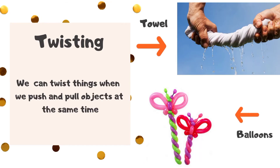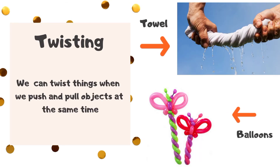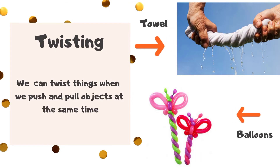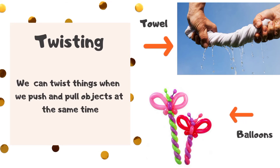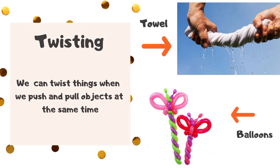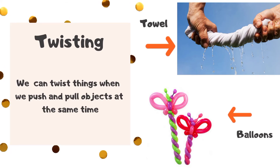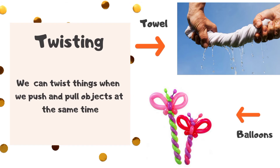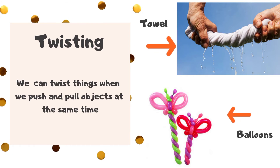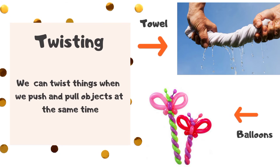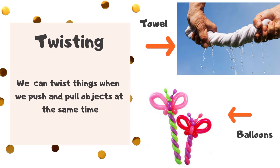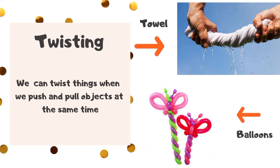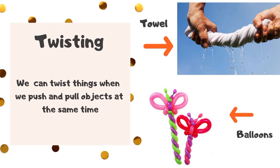Twisting. We can twist things when we push and pull objects at the same time. Examples of objects that we can twist are a towel and balloons.